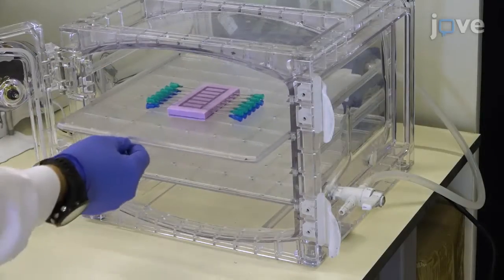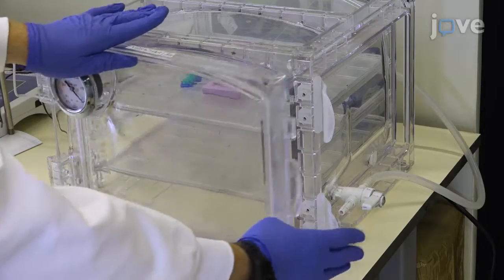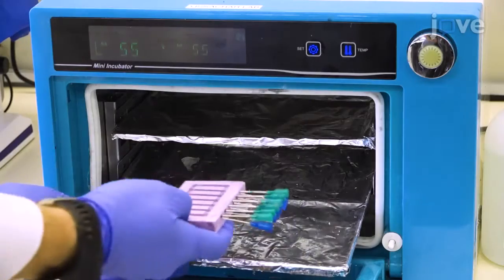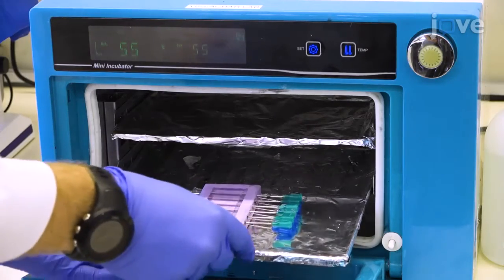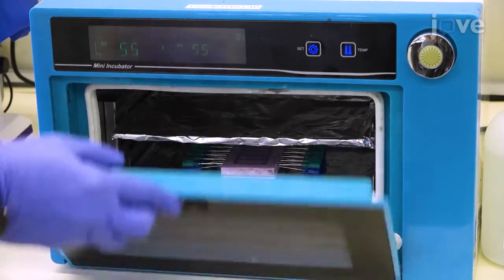Place the molds in a vacuum chamber for 30 minutes to remove air bubbles from the PDMS mix. Then incubate the molds at 55 degrees Celsius overnight to complete PDMS polymerization.